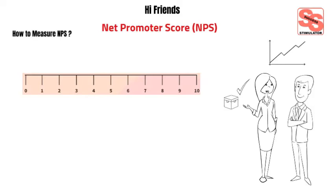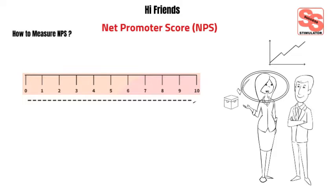How to Measure NPS. Net Promoter Score is a way of measuring customer satisfaction, or a widely used instrument for measuring customer loyalty in practice. Customers rate any organization on a scale of 1 to 10. NPS customers are categorized into three groups: 1. Promoters, 2. Passives, 3. Detractors.